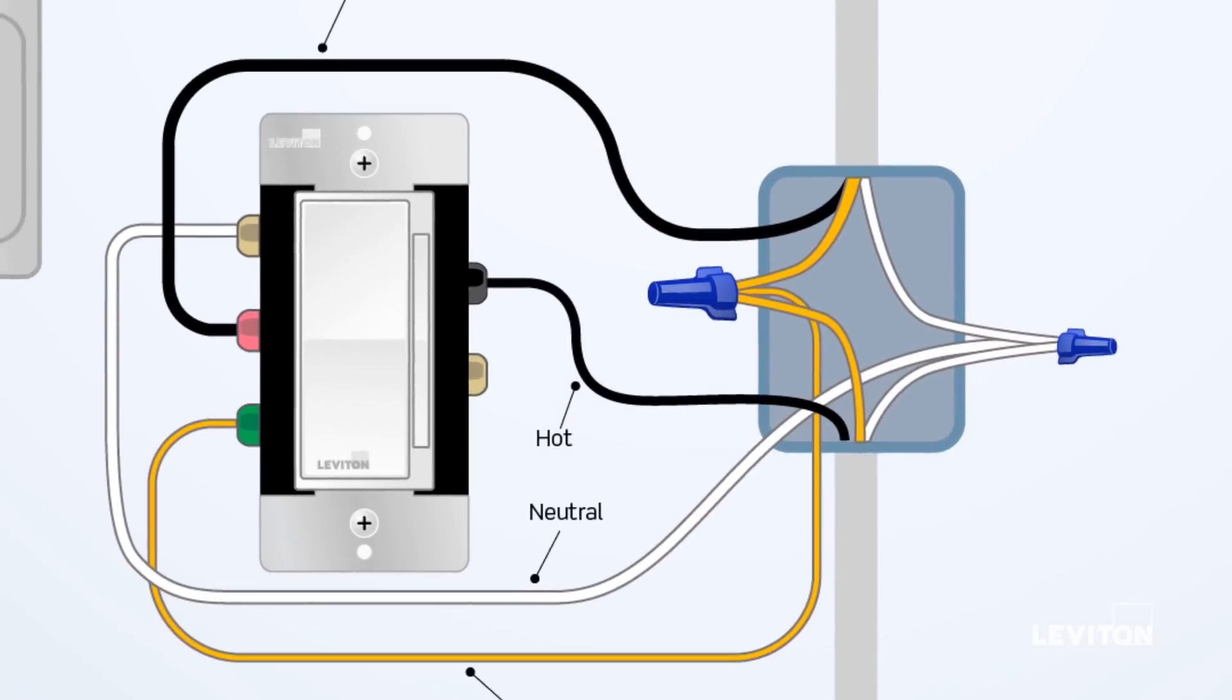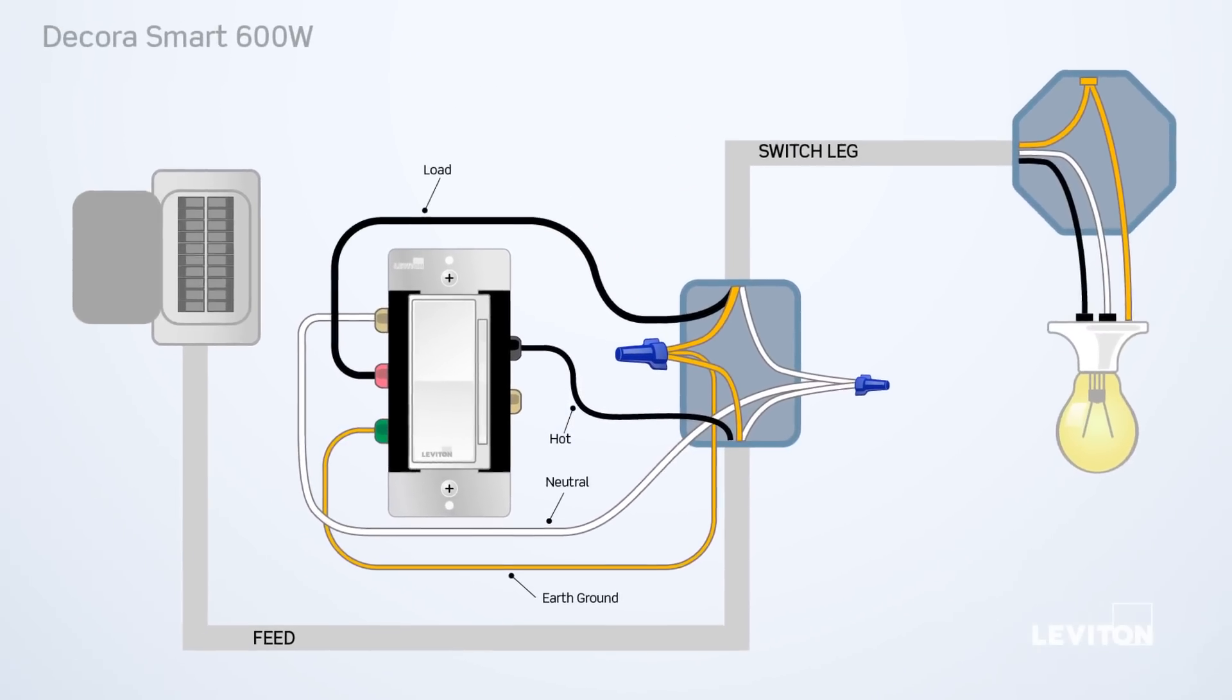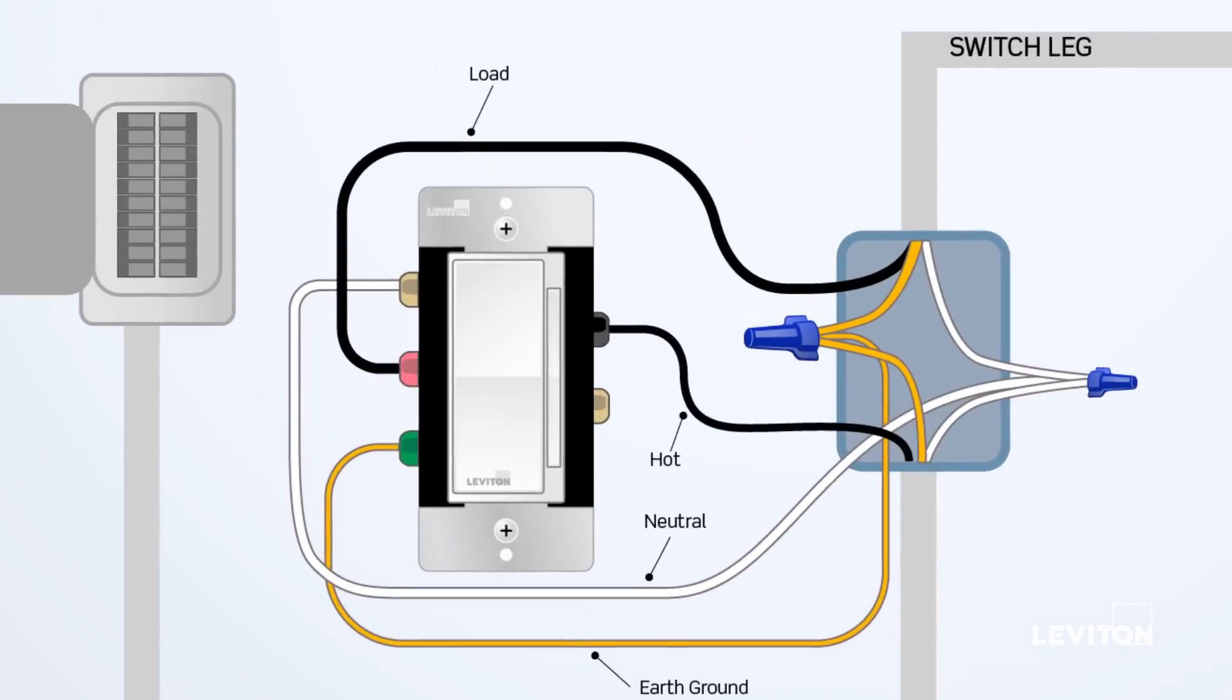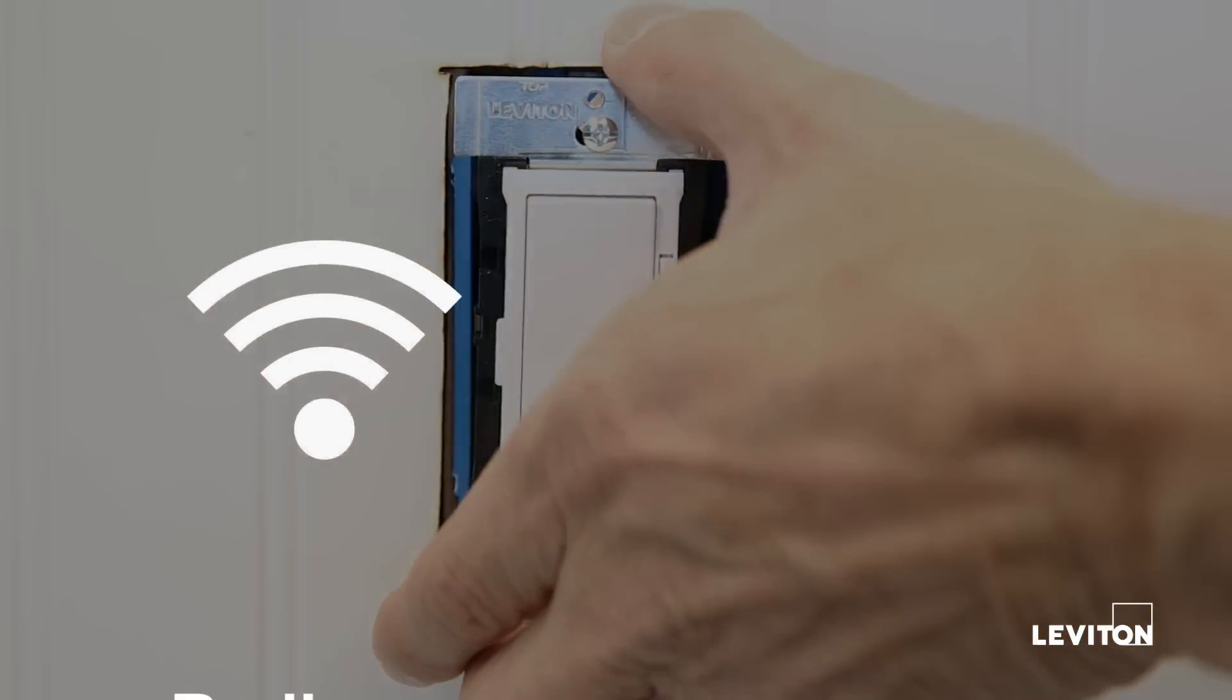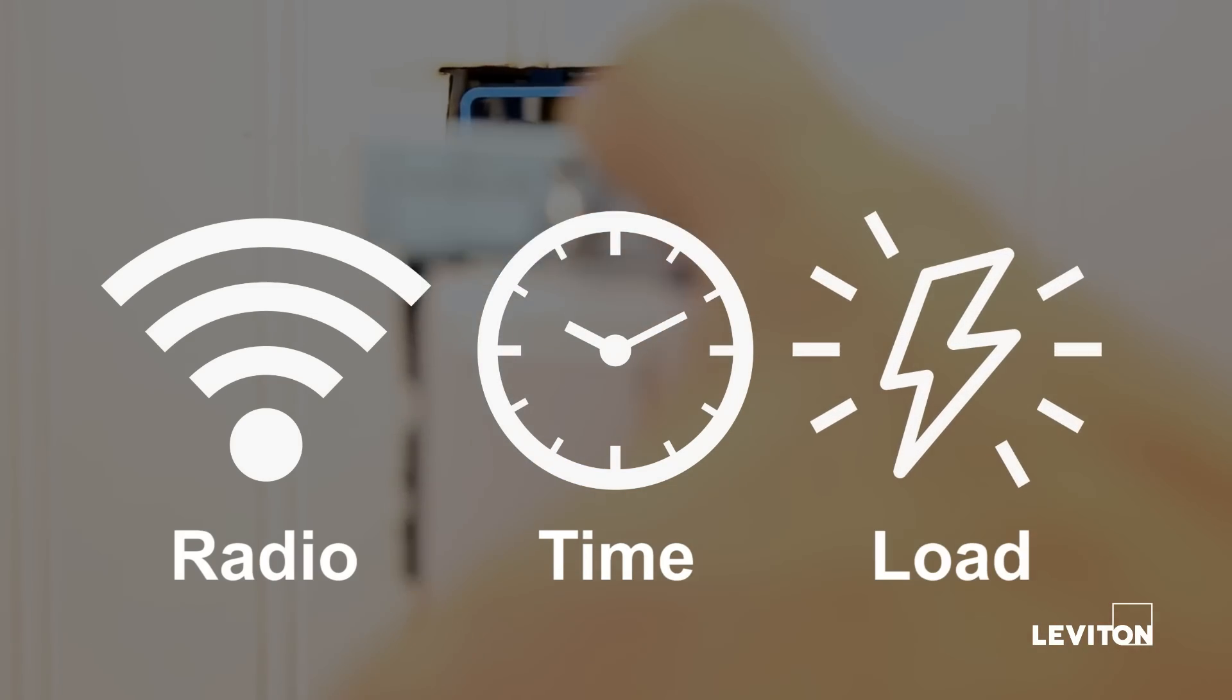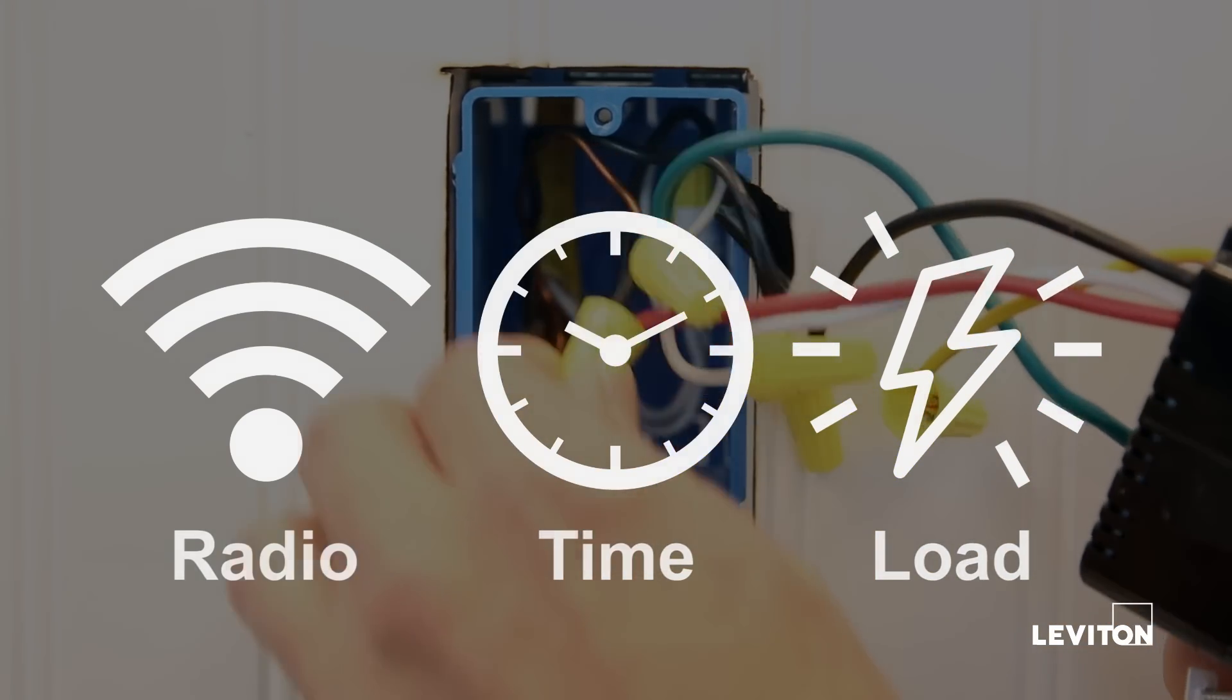The neutral wire provides continuous power to the Leviton smart light switch or dimmer and is required to allow communication with today's latest home automation devices. If there is not a neutral wire available in the switch location, the dimmer or switch will not remain powered and not function properly. With smart switches and dimmers, the neutral wire is required to power the communication radio, keep time, and control the load. Even when the load is off, the intelligence in your smart device must remain powered.